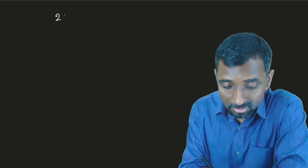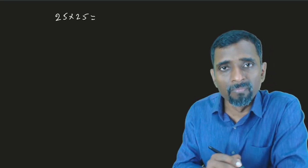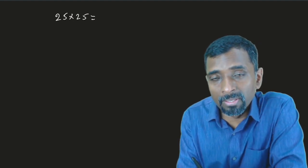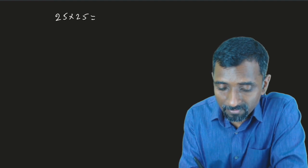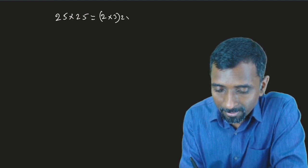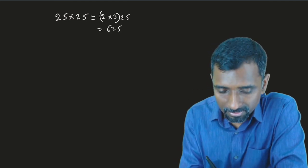It's a very simple idea. We have a shortcut method for this. If we are multiplying 25 with 25, we can just add 1 to the tens place and multiply. We can say it is 2 multiply 3, then 25. It becomes 625. It's a very simple shortcut method.